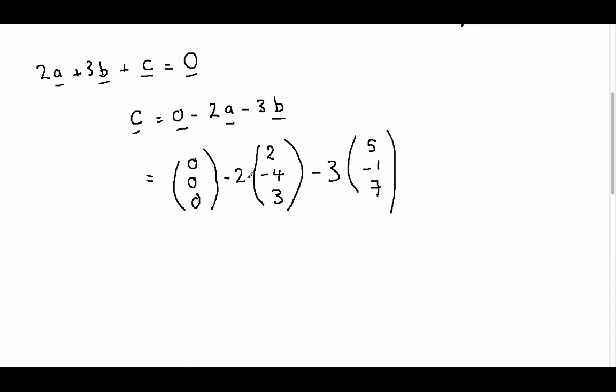So what we are first going to do is multiply each vector by the scalar that it has out in front of it. So we are going to have 0, 0, 0, that one is unchanged. Then we have minus, now we have 2 lots of vector a, so when we take the 2 in we will get 2 times 2, which is 4.